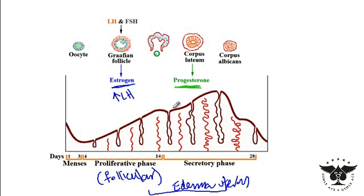The corpus luteum produces progesterone. What progesterone does — just like estrogen — is that it causes proliferation of the endometrial wall as well as vascularization. One critical change, however, is that it decreases uterine contractions.